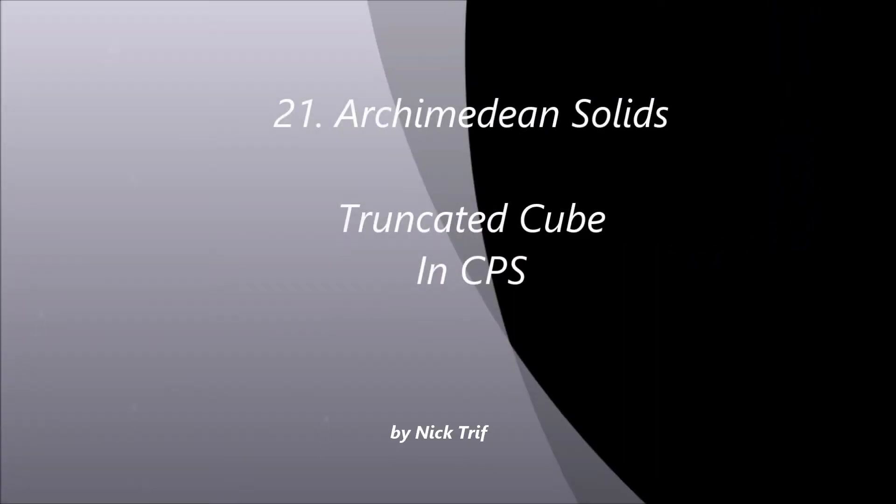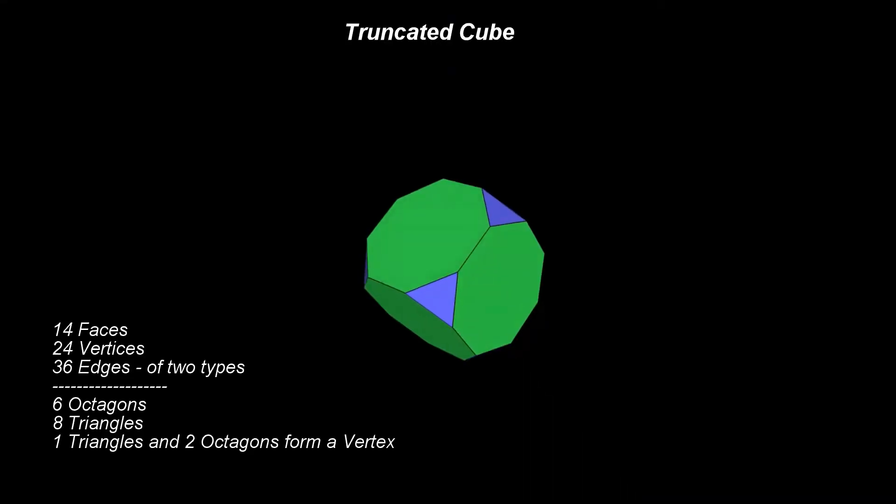Archimedean solids. Truncated cube in CPS. In the classical geometry, a truncated cube is generated from a cube using the same approach used for generating the truncated tetrahedron or the truncated octahedron.